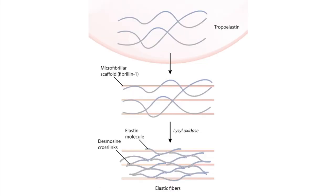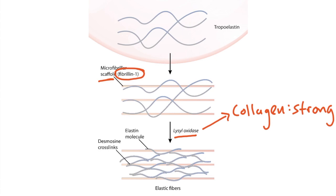Now let's discuss elastin. The details of elastin synthesis are not as important as collagen synthesis; however, elastin is synthesized in a very similar way. One key difference is that elastin relies on a scaffold of microfibril molecules. Fibrillin 1 is a component of the microfibrils, and just like collagen, elastin synthesis relies on lysyl oxidase for cross-linking, which gives elastin its elastic, stretchy properties. This is especially important in the lungs. Alpha-1 antitrypsin deficiency results in increased degradation of elastin and can cause emphysema.